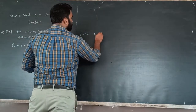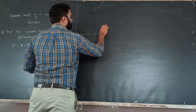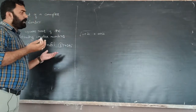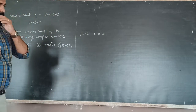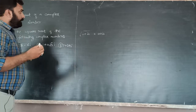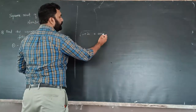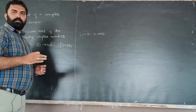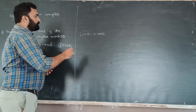We set that equal to a plus bi. Squaring both sides — square root of both sides.